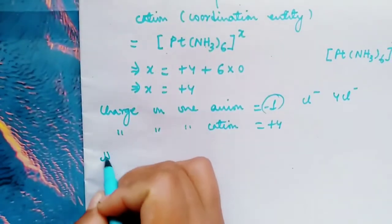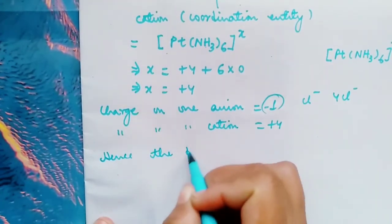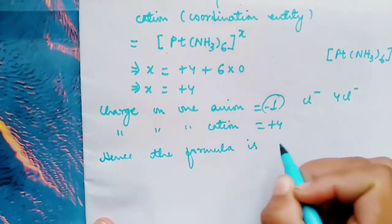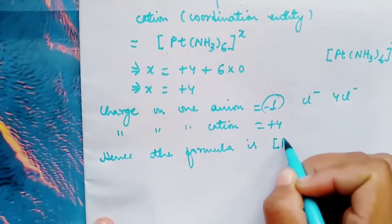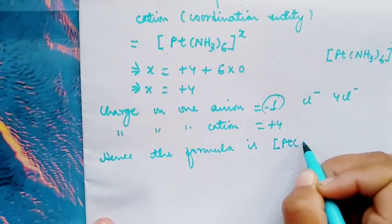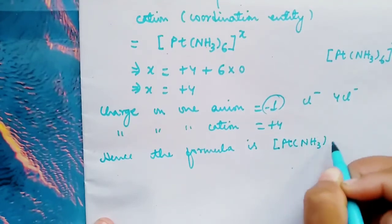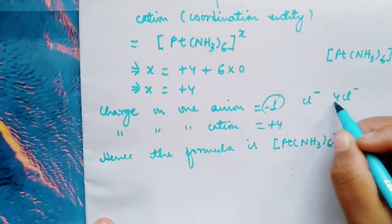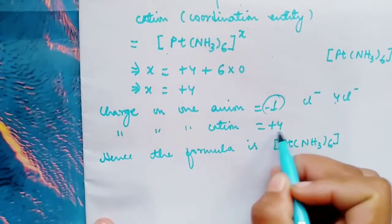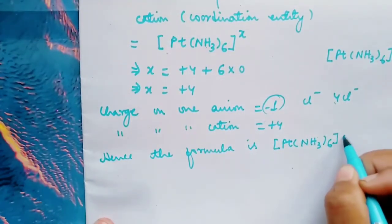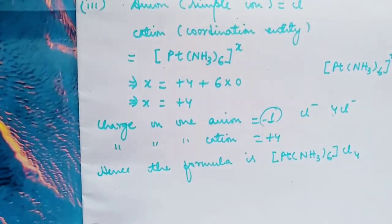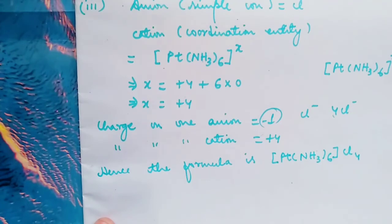Hence the formula for the given compound is: write first this one, hexaammineplatinum(IV) chloride. We need 4 Cl- in order to be balanced with this one, so it is Cl4. In this way we write the formula of coordination compounds when the names are given.